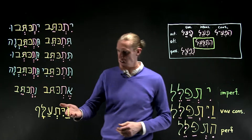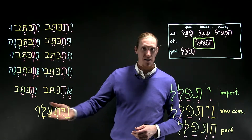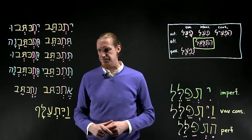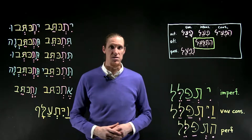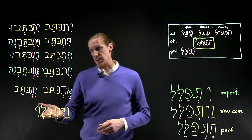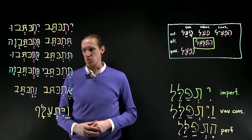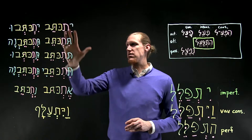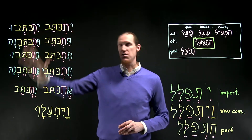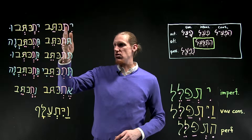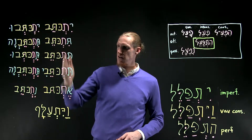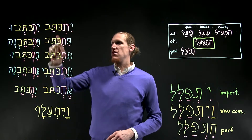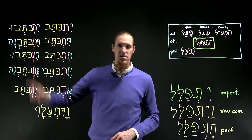You see, again, the pattern is consistent and the dagesh forte in the middle root letter and everything else is pretty straightforward — 'it ae,' in this case 'it a'a,' which is sometimes a modification, but it's still pretty clear. And you can see here in the paradigm, your tav in between the prefix and the first root letter, identified here in pink, consistent all the way down. Dagesh in the middle root letter, consistent all the way down.